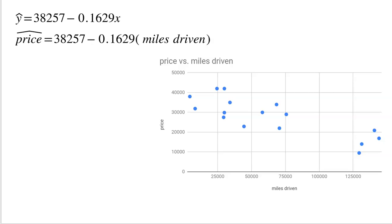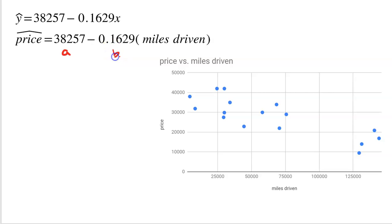What we did was we created that linear regression model to try to predict the price based on the miles driven. We got our Y-intercept, the A-value, 38,257. We got our slope, negative 0.1629. You plug in the miles of a truck and you get a predicted price for that truck.